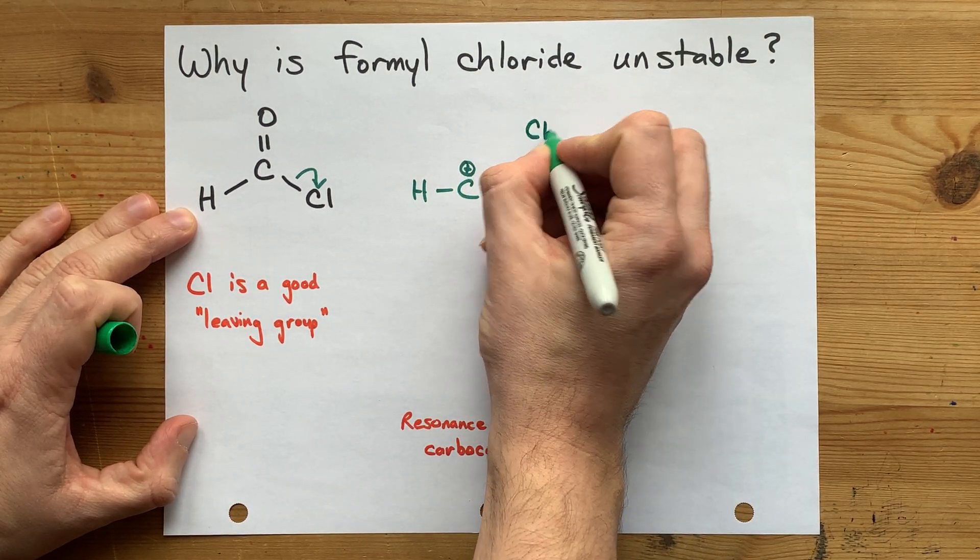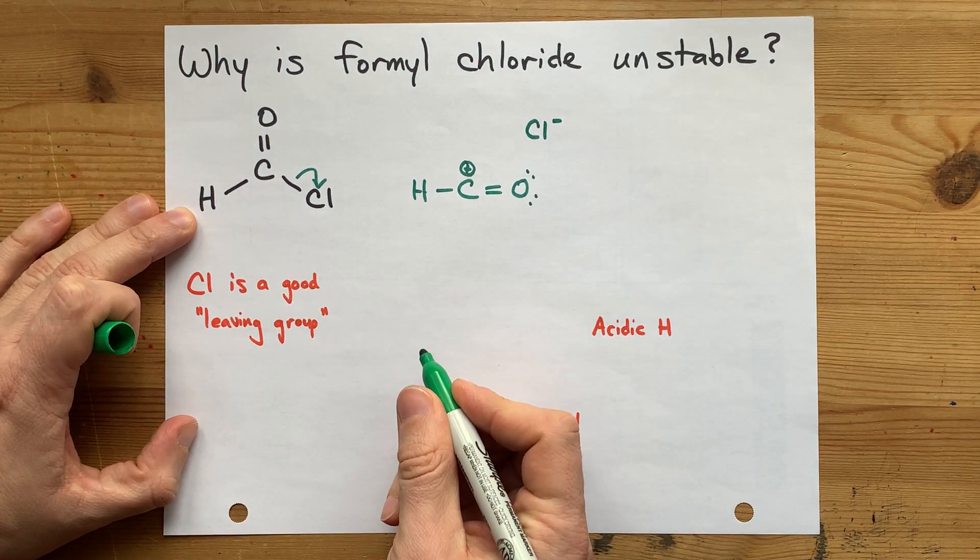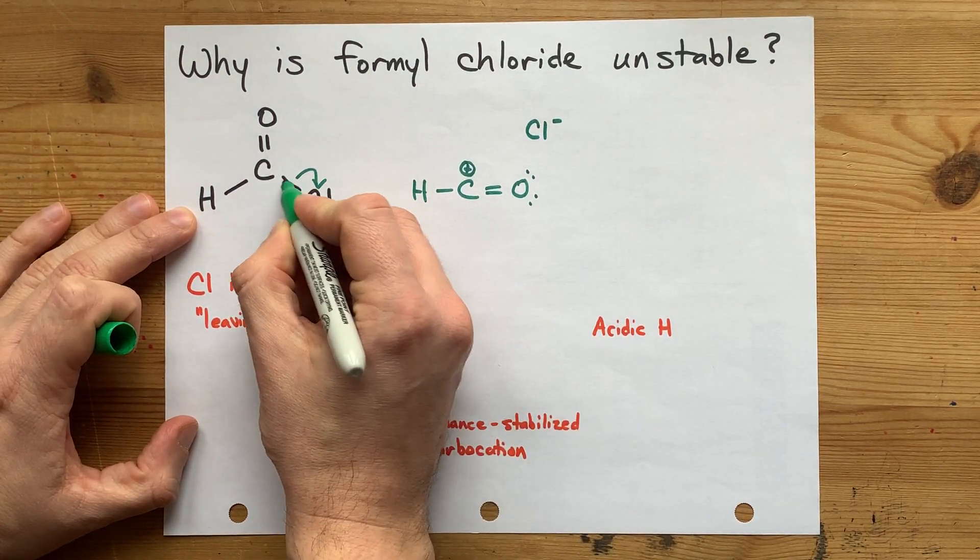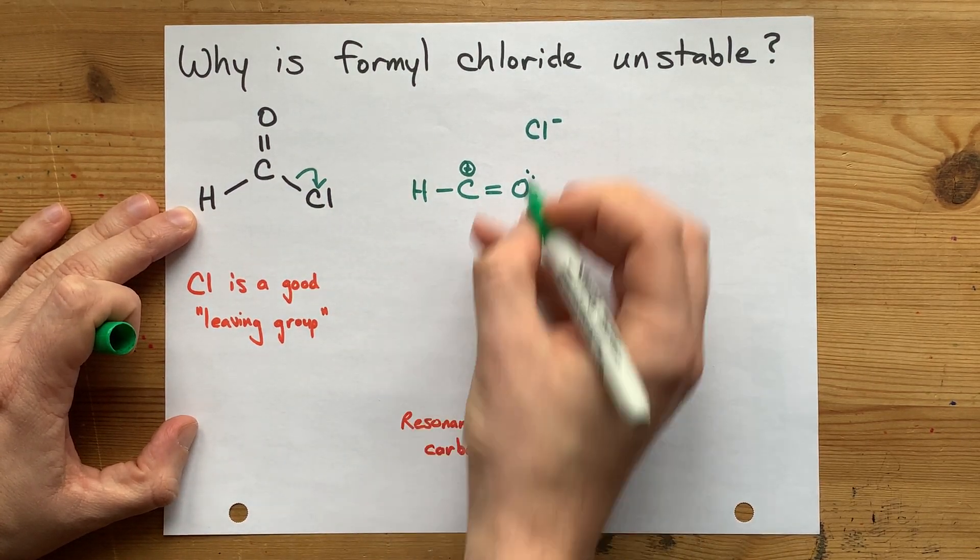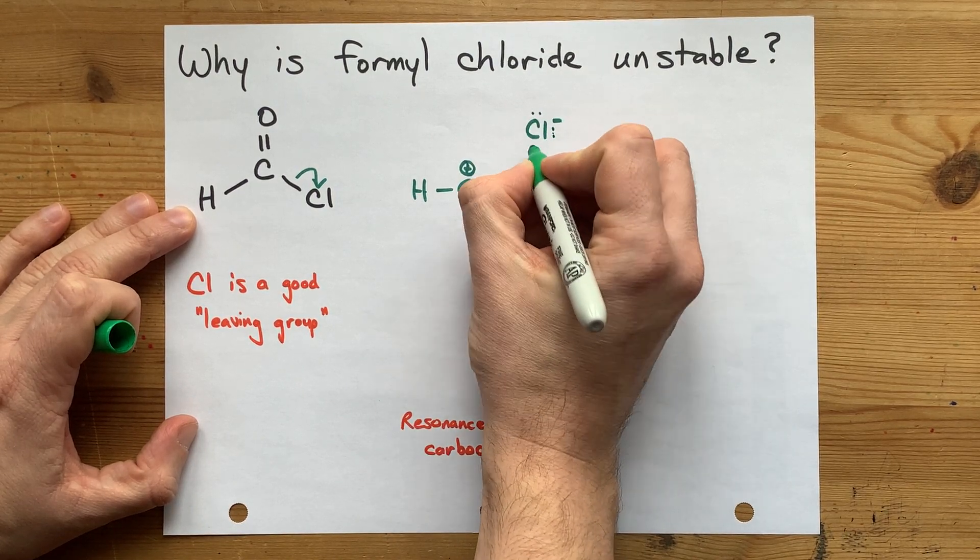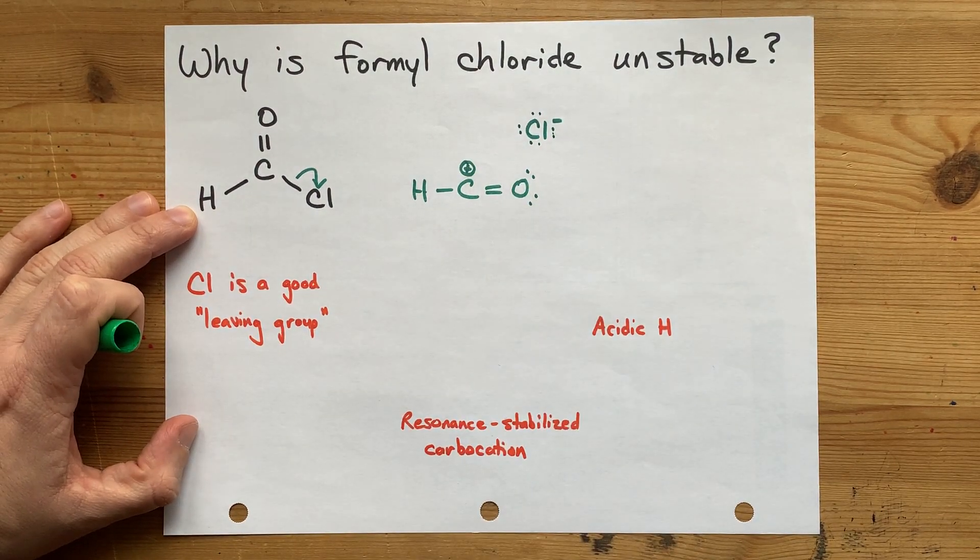Now we also have a Cl- ion here. It took both of those electrons in that bonding pair and so it has a complete octet. Not that it necessarily matters to us.